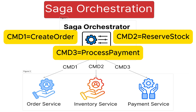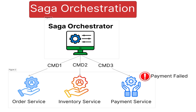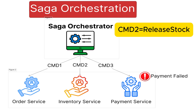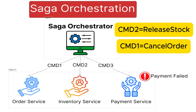But what if something fails? Let's say the payment fails due to insufficient funds. The orchestrator then performs compensating actions to undo what was already done. It tells the inventory service to release the reserved stocks by sending a release stock command. It also tells the order service to cancel the order by sending a cancel order command. These compensating actions are like reverse operations to bring the system back to a consistent state.